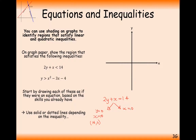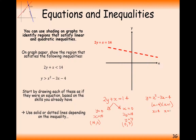Plot those coordinates and join them up for the line. It's a dotted line because it's strictly less than 14. For y equals x squared minus 3x minus 4, we factorize to get (x minus 4)(x plus 1), giving roots of 4 and minus 1. It's a happy quadratic passing through those roots and through minus 4 on the y-axis. This one needs to be a solid line.